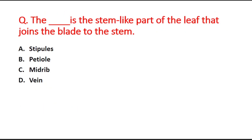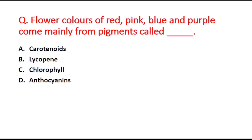Next question: blank is the stem-like part of the leaf that joins the blade to the stem. Option A is stipules, option B is petiole, option C is midrib, and option D is vein. The right answer is option B, petiole.